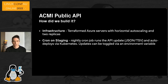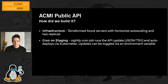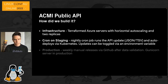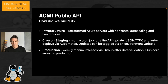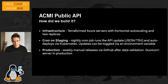We also have environment variables for including images and videos, so as we get rights cleared we'll add them to the public API via a Terraform toggle. In production, we trigger manual releases weekly after data validation on staging to make sure we haven't broken anything, and we use a Gunicorn server to serve the JSON.